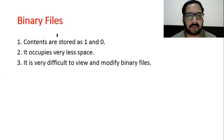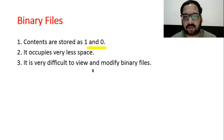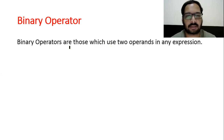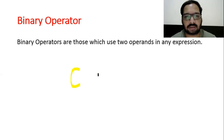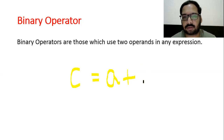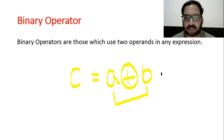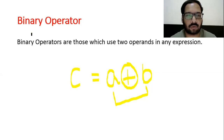Binary files: contents are stored as 1s and 0s, they occupy very less space, and it is very difficult to view and modify binary files — we can only store and retrieve them through code. Binary operators are those which use two operands in an expression. For example, in c = a + b, the plus operator requires two operands a and b. Operators that require two operands are called binary operators.